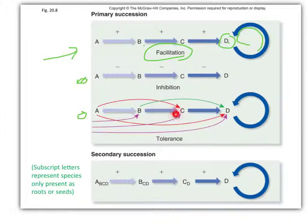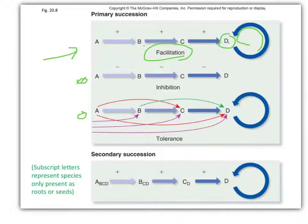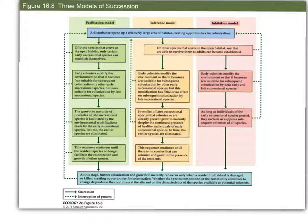Although in the tolerance model we would still predict more of a stable climax community. The secondary succession diagram indicates that these species are present as roots or seeds, and those seeds or roots allow the arrival of later species to happen more quickly — this is a secondary succession facilitation mechanism. This figure from the textbook gives a much more detailed picture of what goes on within these three models.